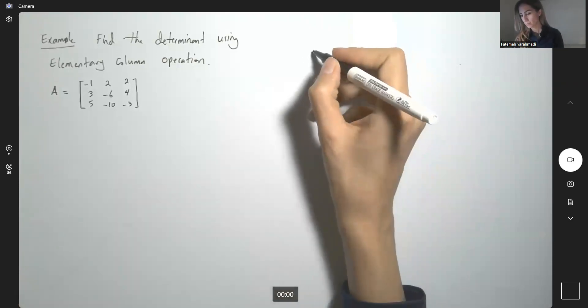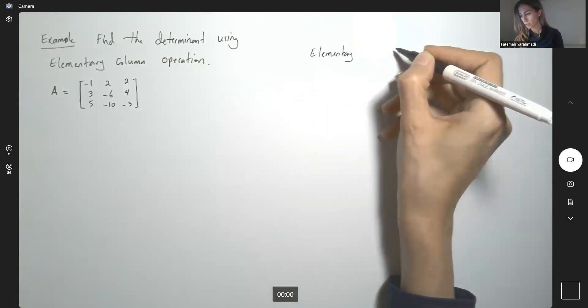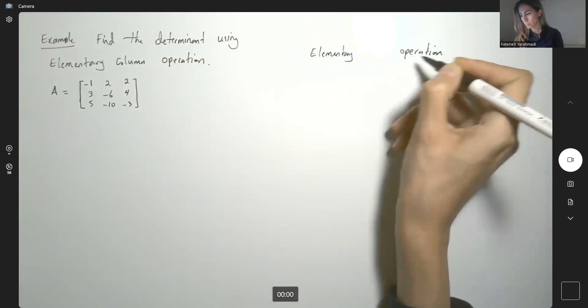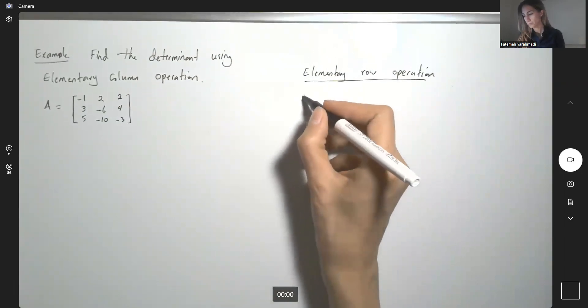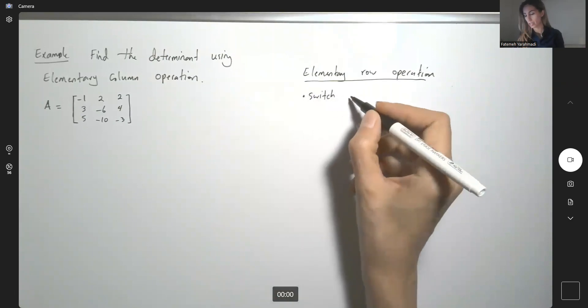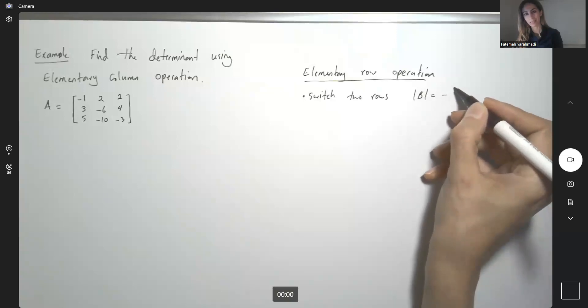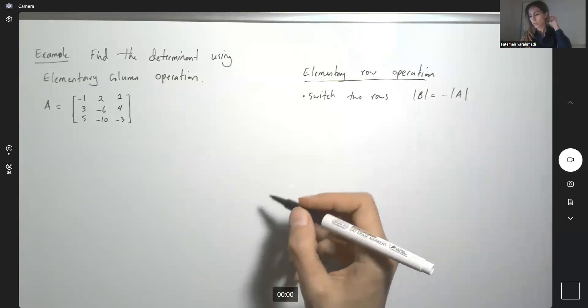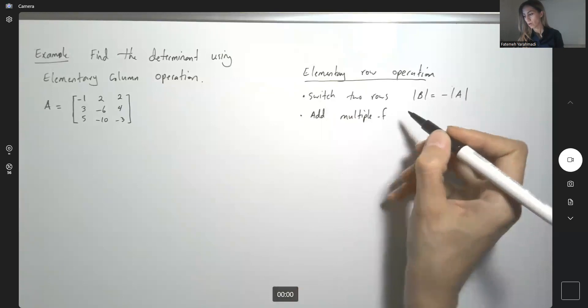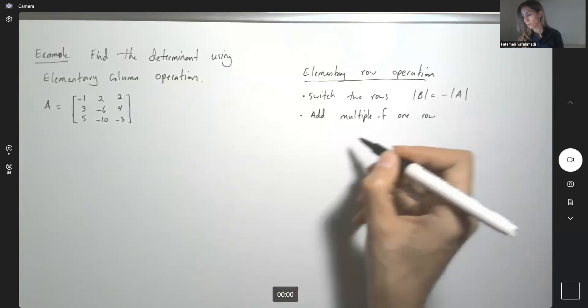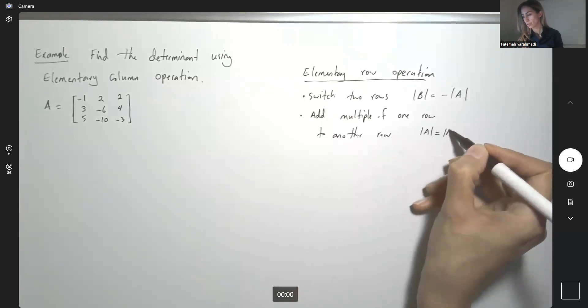So remember, so far we talked about elementary row operation, and we saw that if we switch two rows, or interchange two rows, the determinant of the resulting matrix is negative the determinant of the first matrix. You also saw that if you add multiple of one row to another row, the determinant is going to be the same.